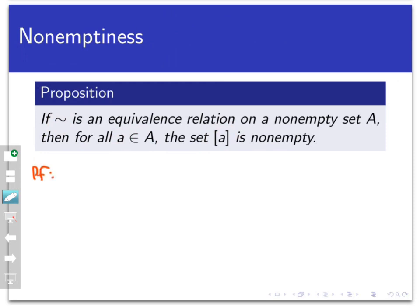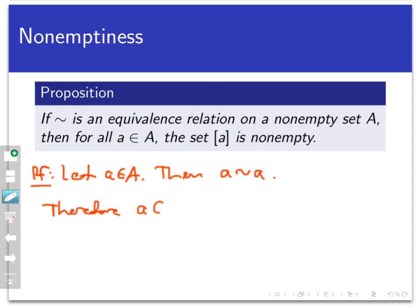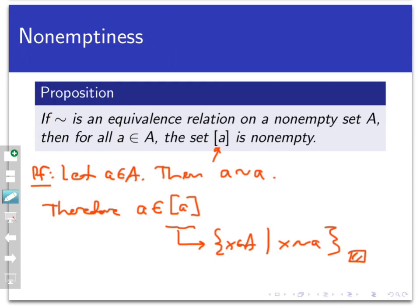Here's the proof. Let a be in capital A. Then since tilde is an equivalence relation, a is equivalent to itself — that's because of the reflexive property. Therefore, since a is equivalent to itself, a belongs to its own equivalence class. This equivalence class is the set of all points in capital A such that x is related to a, and a itself is one of those points. So all equivalence classes are non-empty; they at least contain the thing that is between the square brackets.